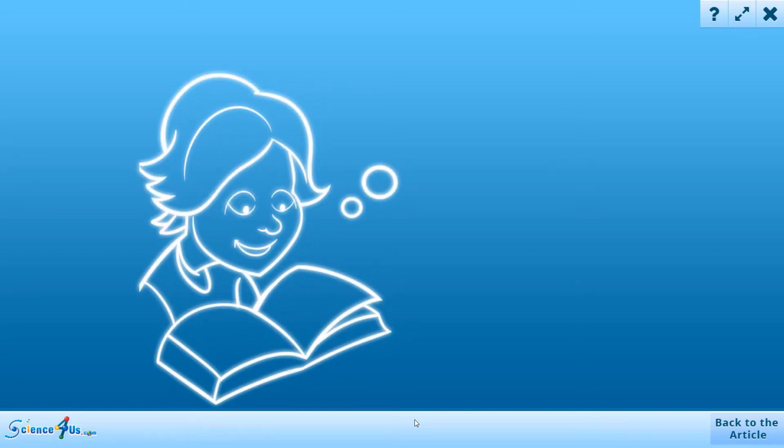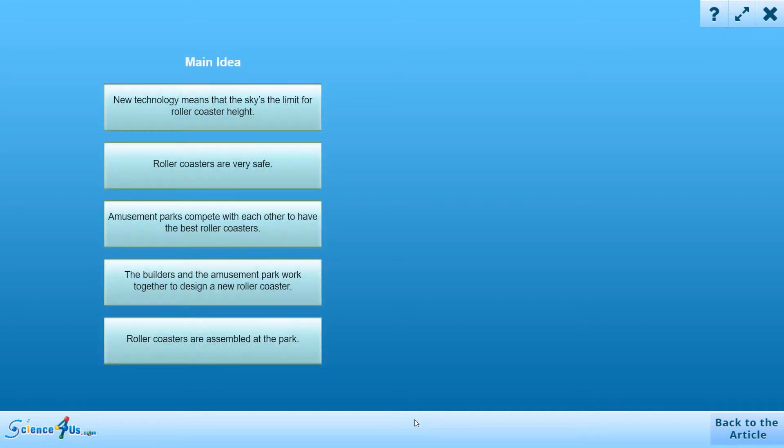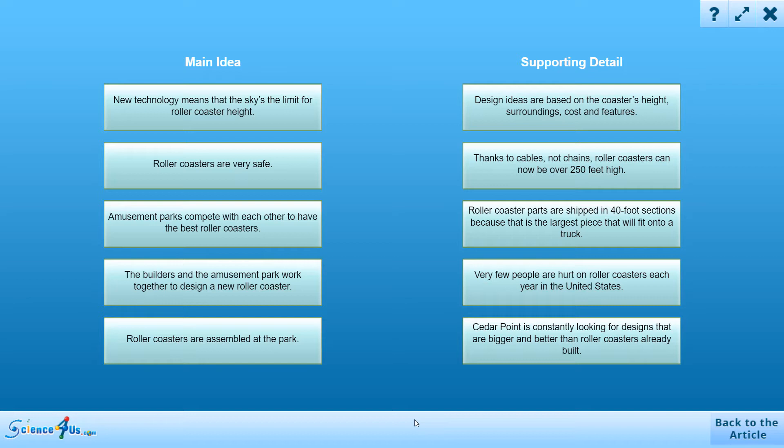Interesting. Roller coasters are so scary. Informational text informs readers about a topic. To inform readers about the topic, authors support their main ideas with supporting details. Match the main ideas to the appropriate supporting details.